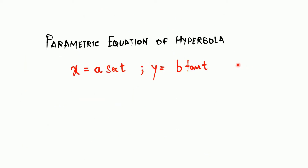We will also define a parametric equation for a hyperbola. Using a third variable t, we can write x = a sec(t) and y = b tan(t). Remember, these parametric equations are very important for your calculus work, so you should remember the parametric equations of ellipse, circle, and hyperbola.